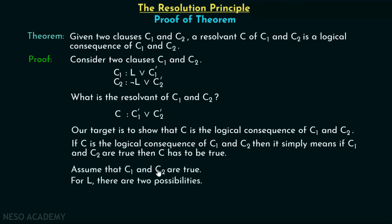Assume that C1 and C2 are true. For the literal L, there are two possibilities: either L is true or L is false. We will consider both cases.